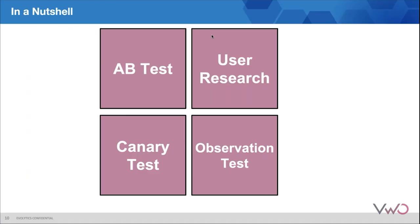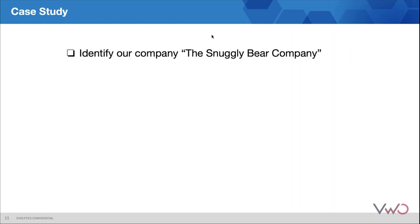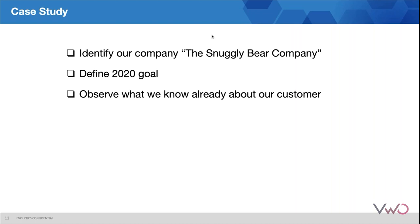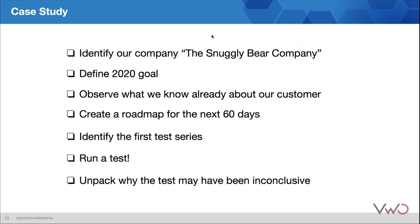With each of these, you can always expect to get inconclusive results, regardless of which form of testing you choose. In order to unpack these results, we'll need to look at a case study. This case study is called the Snuggly Bear Company — it is not a real company, but this is a real case study with real facts. We'll start with identifying the company, define the 2020 goal, call out the observations we know about our customers, run through a roadmap narrowed down to about 60 days, identify our first A/B test series, run a test, and lastly unpack it in multiple ways.